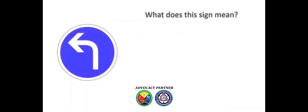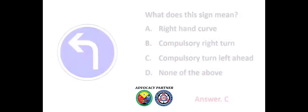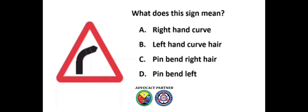What does this sign mean? A) Right hand curve, B) Compulsory right turn, C) Compulsory turn left ahead, D) None of the above. Answer: C) Compulsory turn left ahead. What does this sign mean? A) Right hand curve, B) Left hand curve, C) Hairpin bend right, D) Hairpin bend left. Answer: A) Right hand curve.